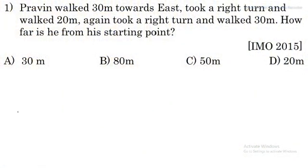Praveen walked 30 meters towards east and took a right turn and walked 20 meters, again took a right turn and walked 30 meters. How far is he from his starting point?